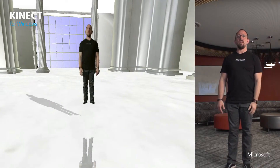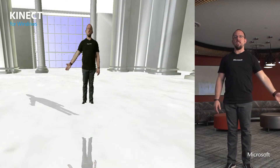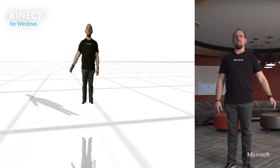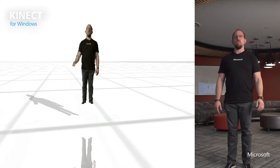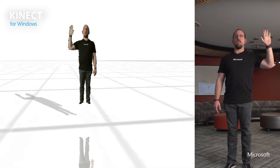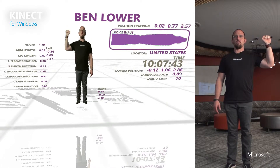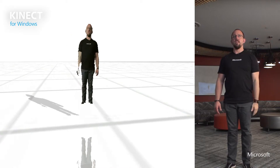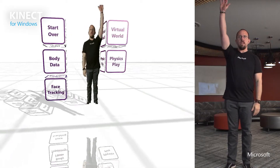We've got voice input — it recognizes that it's me. I just turned it off there by raising my left hand as we're going through these scenes. I can toggle that on and off by just closing my hand and opening my hand.